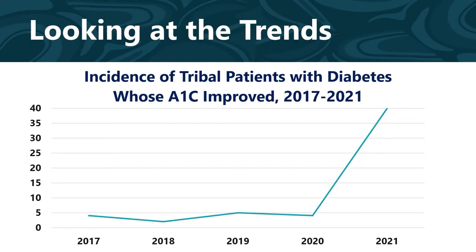Here is the incidence of tribal patients with diabetes whose A1C numbers improved in 2021, 2020, 2019, 2018, and 2017. You can see based on this chart that it appears your team's efforts likely drove this improvement in A1C levels for tribal patients with diabetes. You can share this information with your team and celebrate. You can also ask for permission to share the data with your community and your funders.